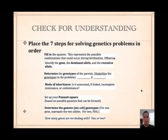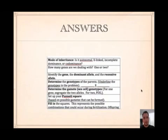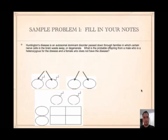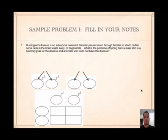Then check for understanding — pause the video and put these in order. Here are the answers; copy them into your worksheet. Here's a sample problem — write it in your notes. Huntington's disease is an autosomal dominant disorder passed down through families in which certain nerve cells in the brain waste away or degenerate. What is a probable offspring from a male who is heterozygous for the disease and a female who does not have the disease?